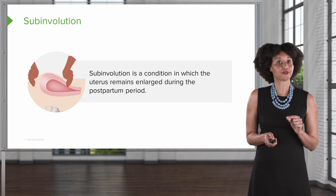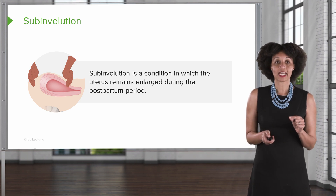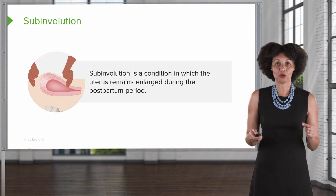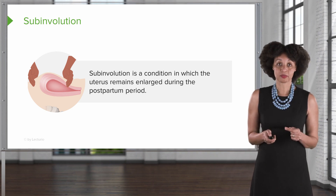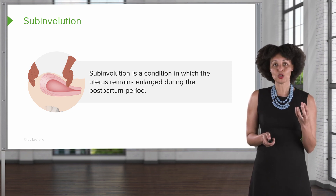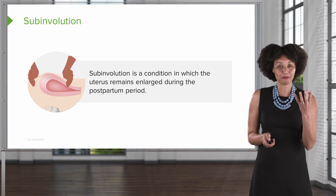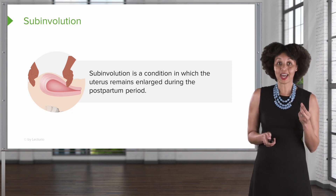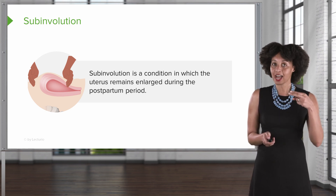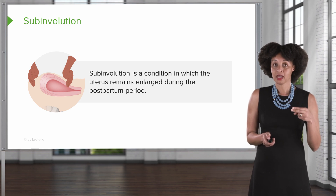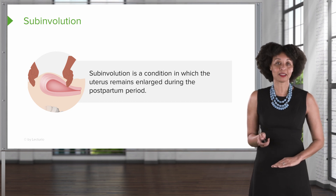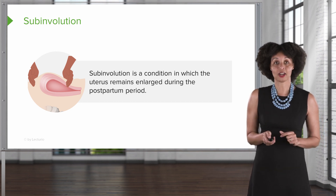What are the clinical features? The first one is heavy, prolonged bleeding — this is when soaking through a pad an hour might actually occur. The uterus will not feel like that firm tennis ball; it'll feel boggy, meaning soft. And finally, irregular descent of the uterus is the hallmark sign — not going down a finger's breadth every day. After two weeks, the uterus should be completely down inside the pelvis; if it's not, that's subinvolution.